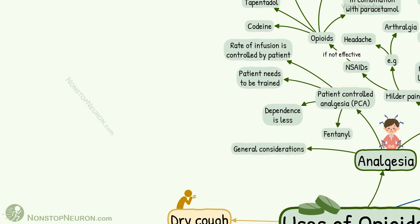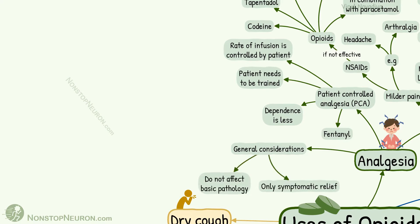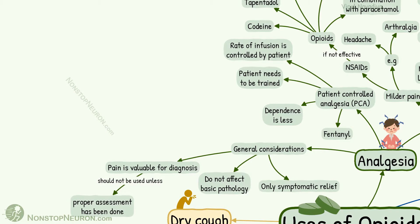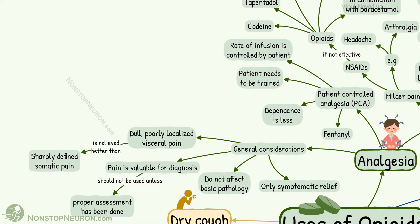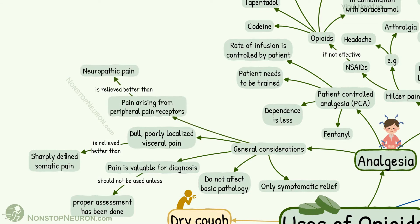When using opiates for pain, there are some general points to keep in mind. Opiates provide only symptomatic relief in pain; they do not affect basic pathology. And since pain is valuable for diagnosis, they should not be used unless a proper assessment has been done. With opiates, dull, poorly localized visceral pain is relieved better than sharply defined somatic pain. Pain arising from peripheral pain receptors is relieved better than neuropathic pain.